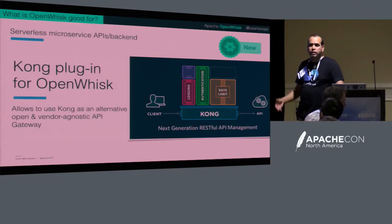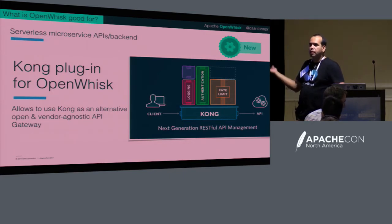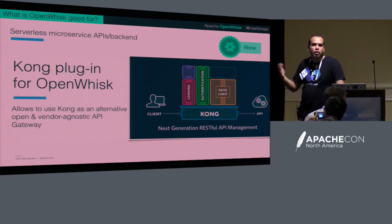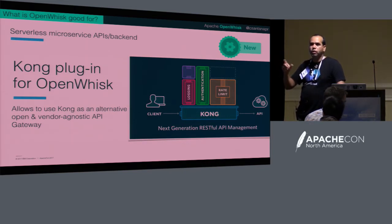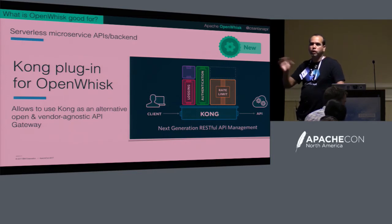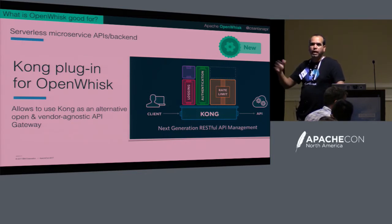Kong is another way of doing API gateway. Since OpenWhisk is open and uses open REST APIs, they implemented a plugin. So if you have Kong in your shop and want to use Kong to define APIs backed by actions or functions, you can do it.